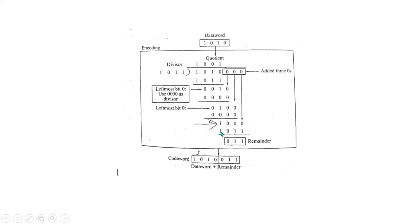In CRC, there is an encoder and a decoder. Now we look at the encoder. The remainder value is the data word. If you add the data word to the remainder, you get the code word.